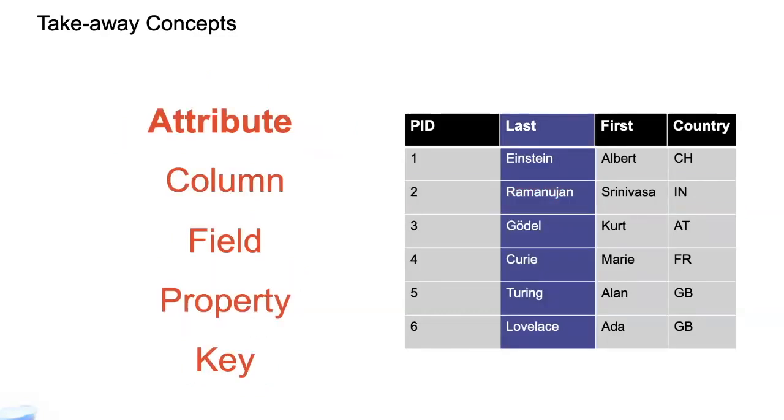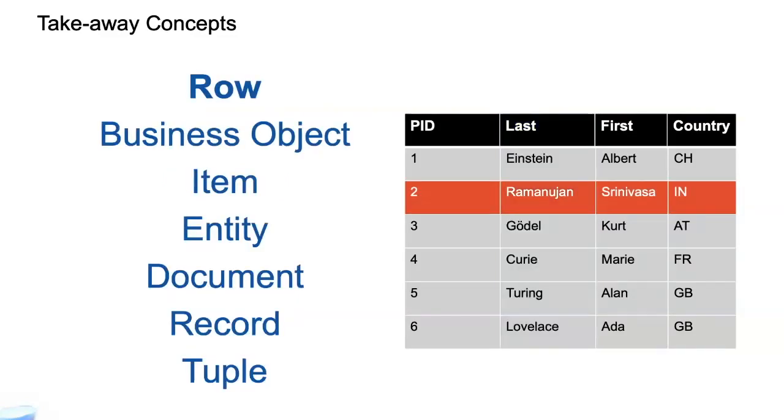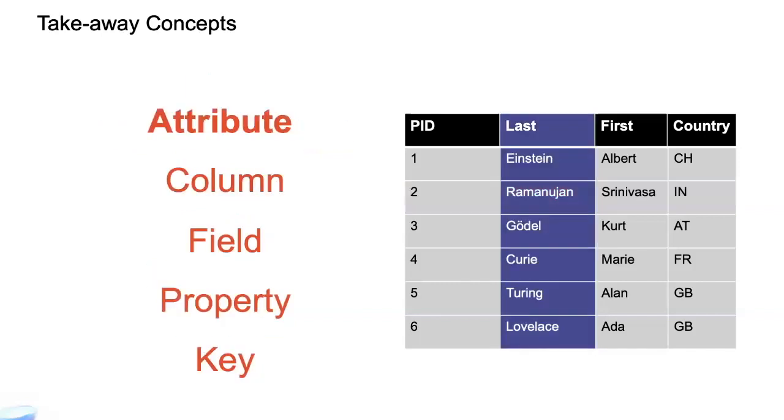All right. Then you have the columns, right? The columns, typically, it's called an attribute. Like the first name is an attribute of a person, right? The last name is another attribute of a person. This is like vertical. So you see horizontal and vertical, right? This is a row. This is the attribute. Column, field, property, key. I don't know what MBA people call that. Maybe they have a fancy name. I don't know, like business property or I don't know. But I don't know of anything official. All right.